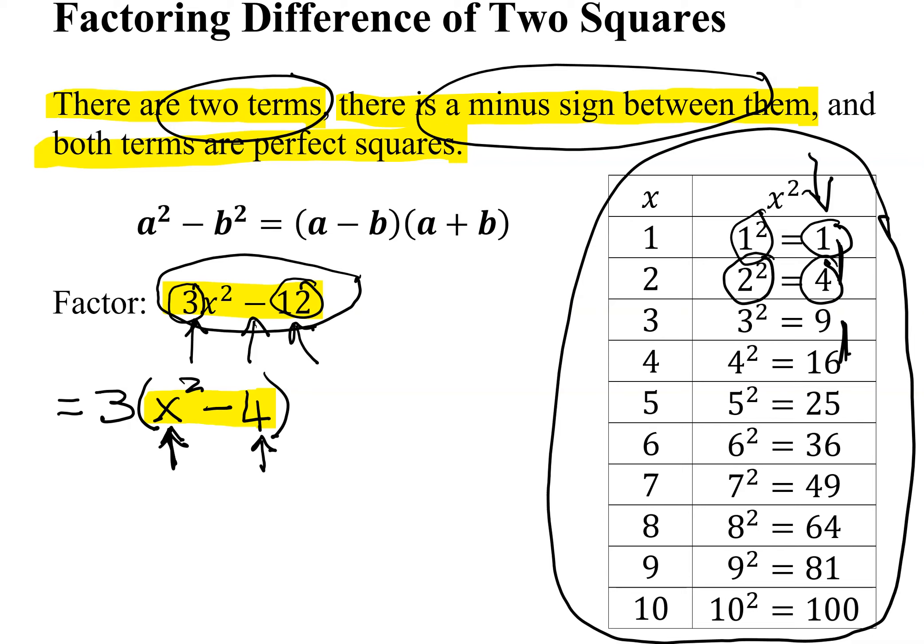So now I can factor this remaining binomial here. I leave the 3 in front. And what does it leave me? I have to have two binomials. I take the square root of x squared which gives me x as my first term. The square root of 4 is 2.